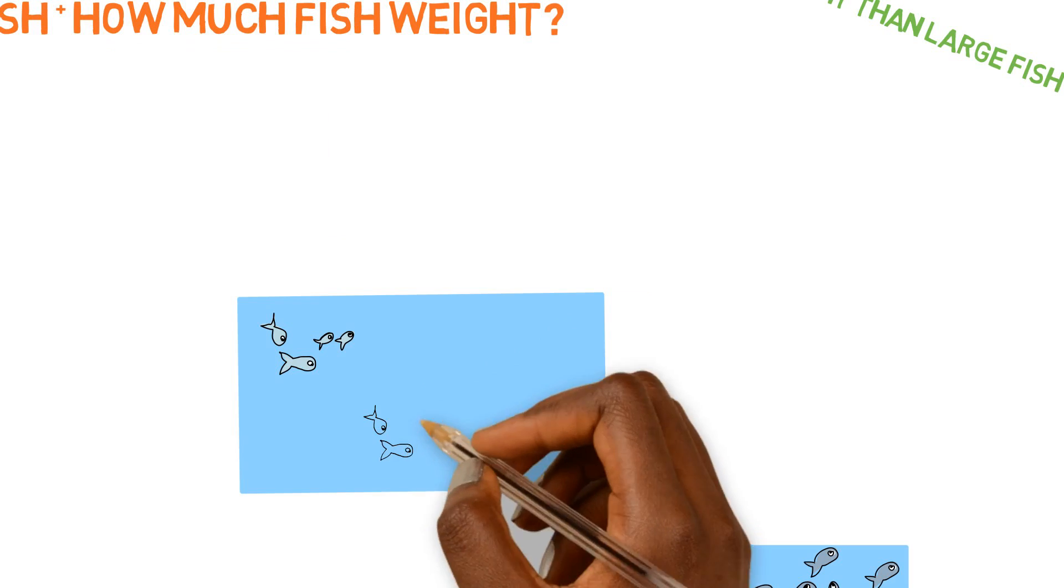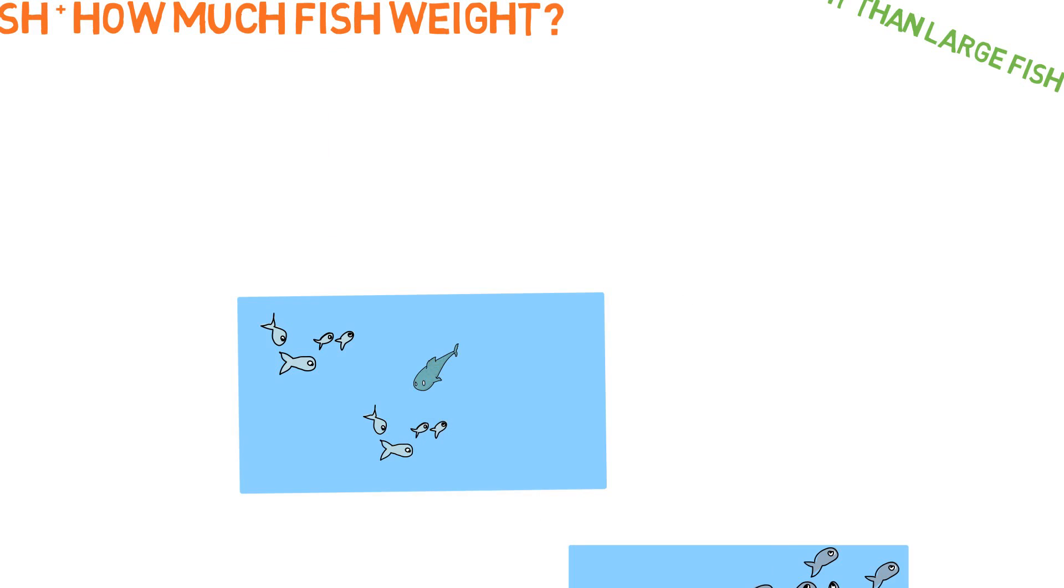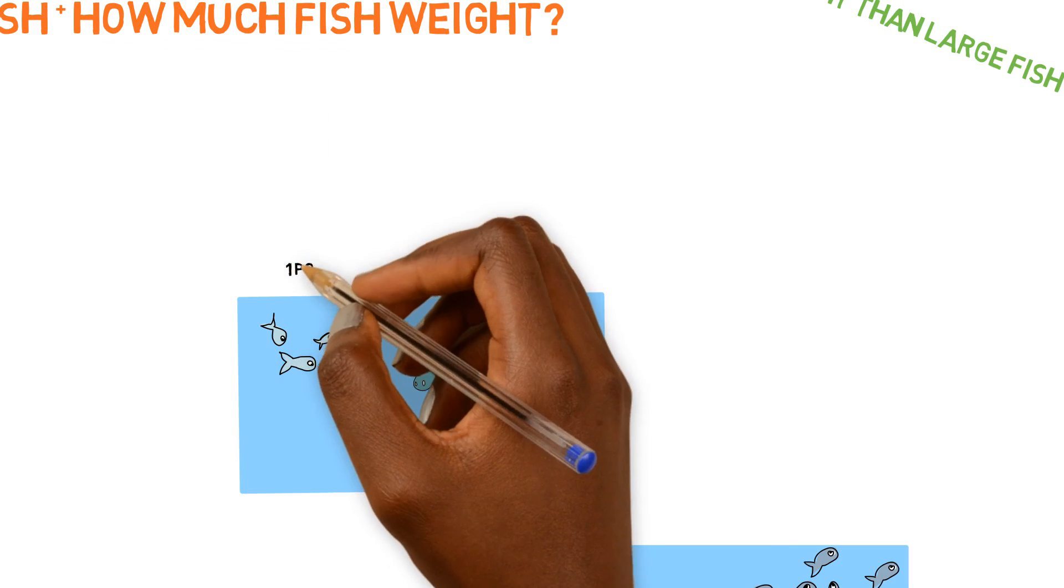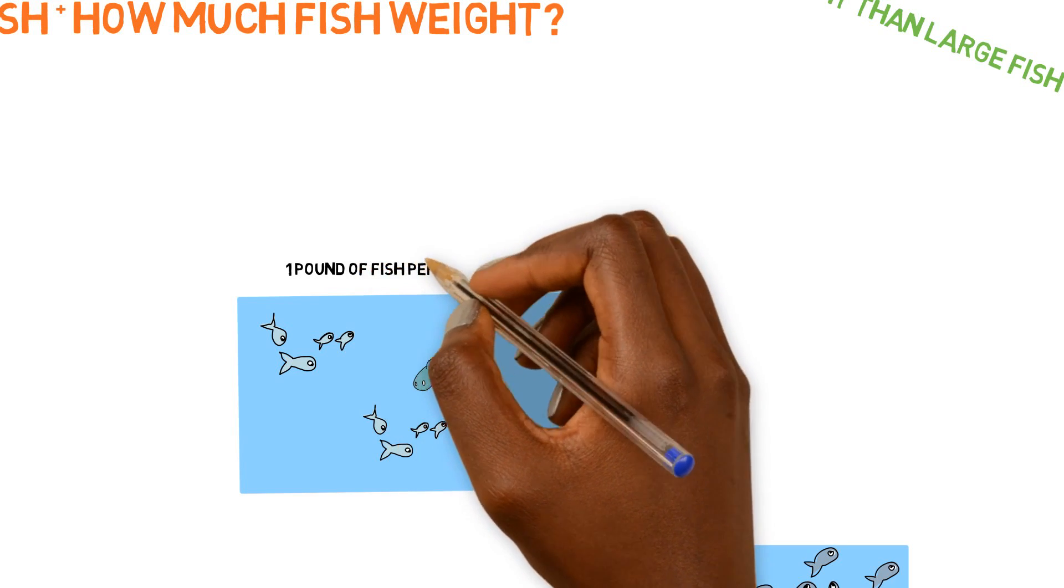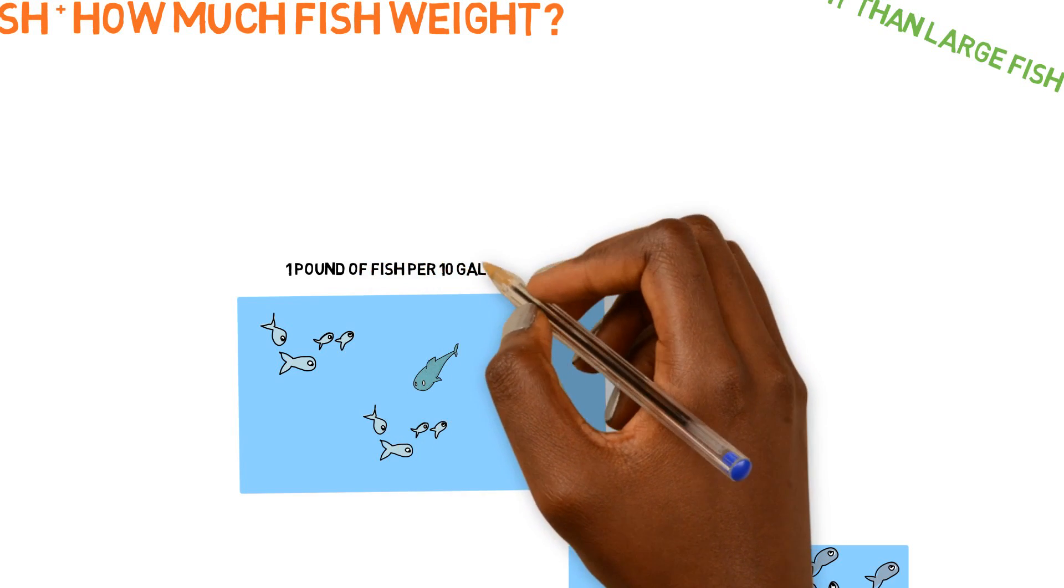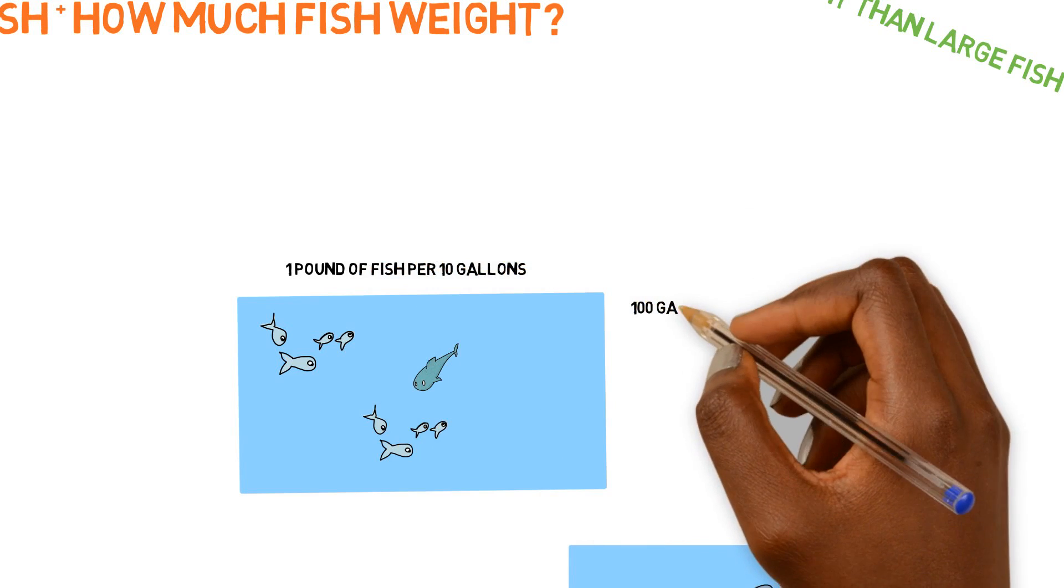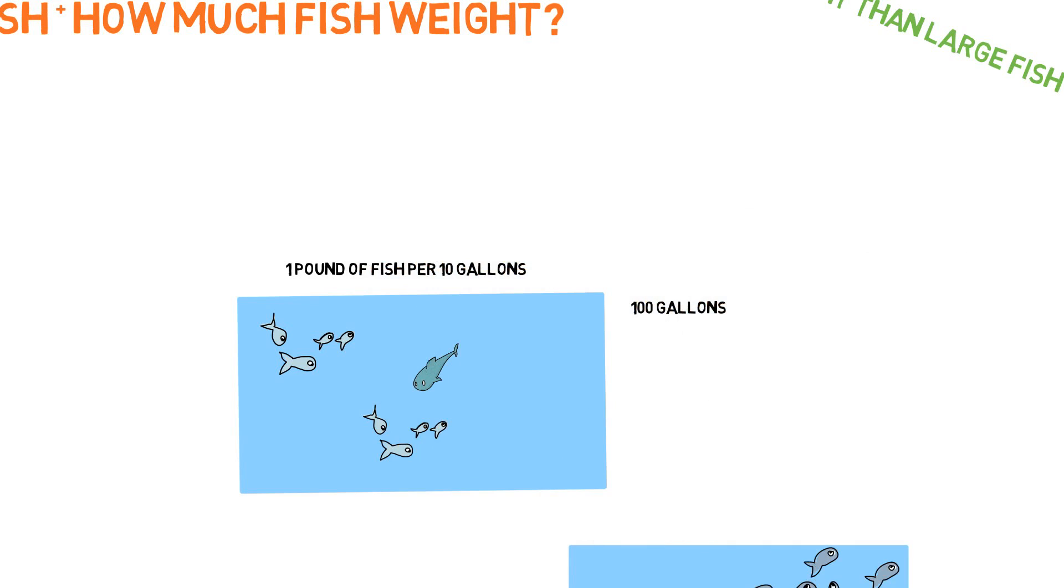So this is important when understanding how many gallons do we need. Let's say, for instance, our circumstance, let's say we want to grow these fish out so we can sell them. So we want an optimal growing environment for these fish. In that case, the lower density we're going to give them. We'll say we'll give them for each pound, we'll give 10 gallons. So that means we need a hundred gallon system to support these fish in an optimal growing environment.